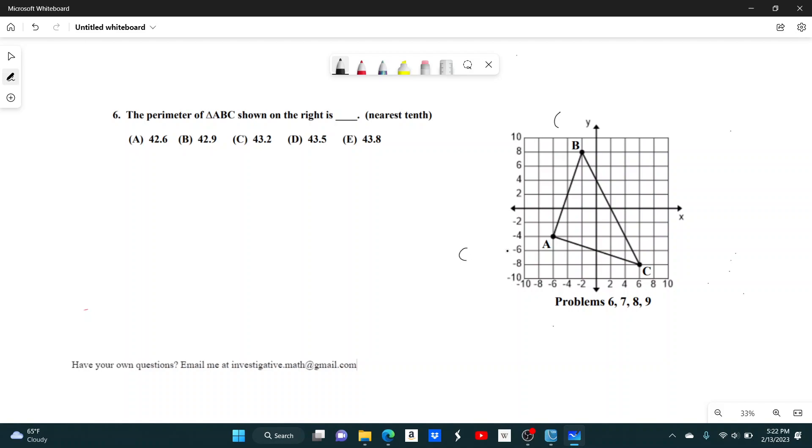Let's find the coordinates of each of these. Coordinate A is at negative 6, negative 4. Coordinate B is at negative 2 and 8. And then C is at 6, negative 8. We can just use distance formula on each of these and add them together, and that'll give us the perimeter.